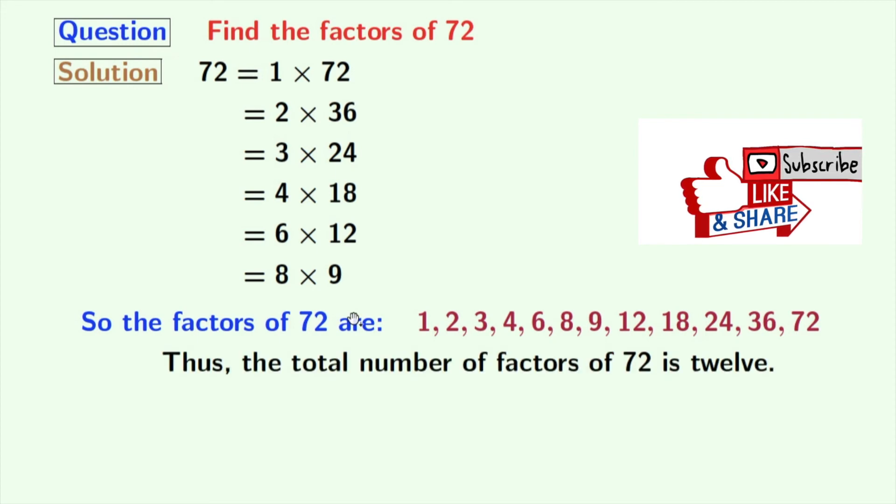So, the total number of factors of 72 is 12.